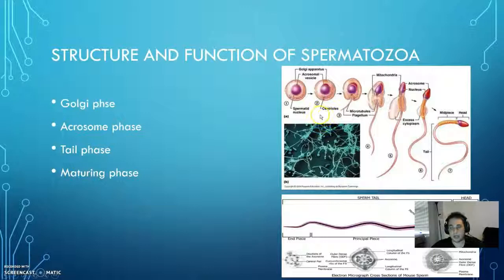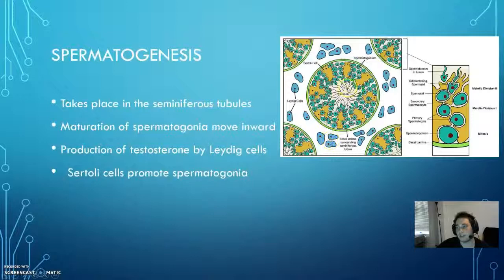The final phase is the maturing phase, where any excess cytoplasm is removed and phagocytized by the Sertoli cells. Once you have this final spermatozoa, it will be in the lumen of the seminiferous tubule.